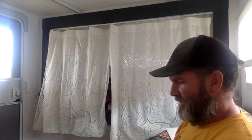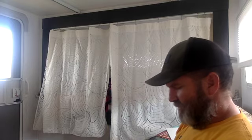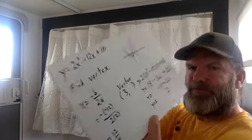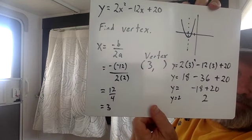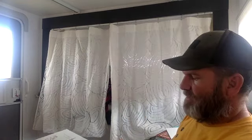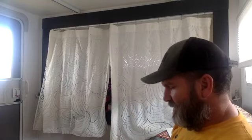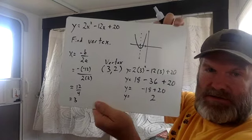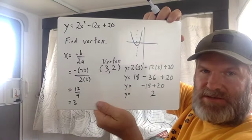So if we substitute in a 3 for x, y is equal to positive 2. Just like that. I wrote down 2 twice, I didn't need to do that. So when x is 3, y is 2, and that is our vertex for that equation, the point (3, 2).